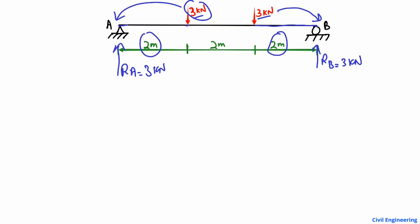RB is also equal to 3 kN. Normally you use equilibrium equations to find support reactions, but here since both loads are at equal distances from their respective supports, half the total load is carried by each support — RA carries half and RB carries half.